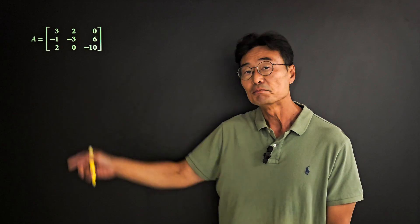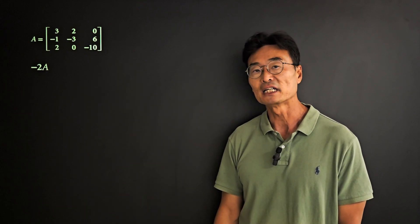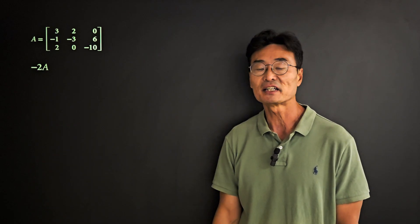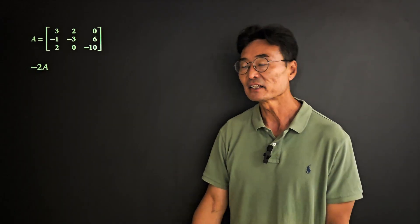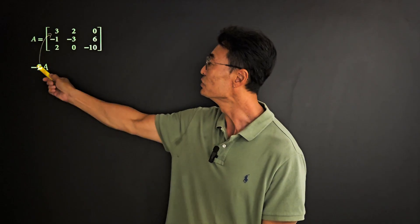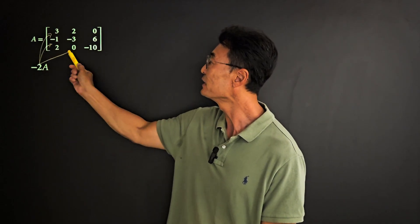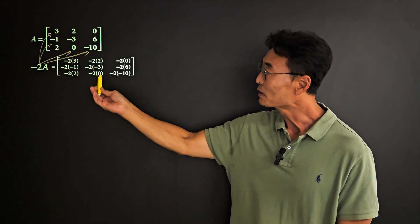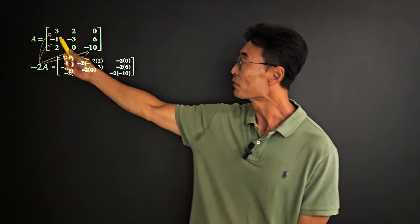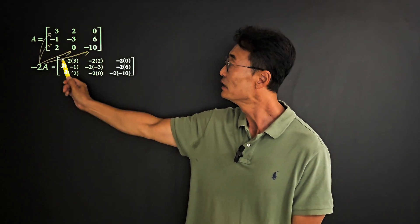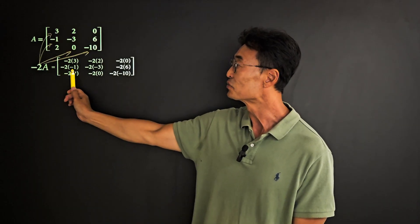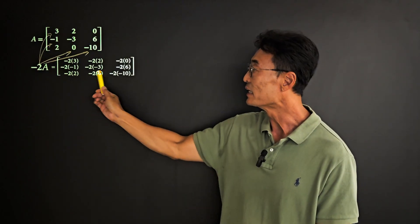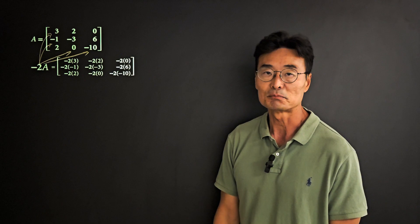Here we have matrix A given, and if we wanted to do negative 2 times A, meaning a number or constant times matrix A, what we have to do is take that number, negative 2, and multiply it to each and every number that's in matrix A. For example, the 3: we have negative 2 times 3. The negative 1: we have negative 2 times negative 1. And the 2: we have negative 2 times 2. And the same goes for each and every number that's in matrix A.